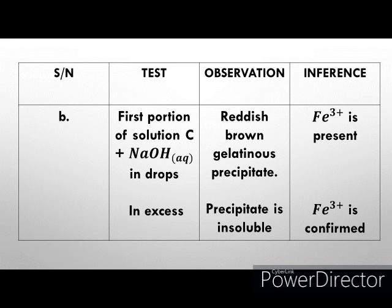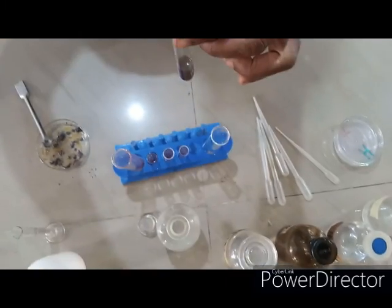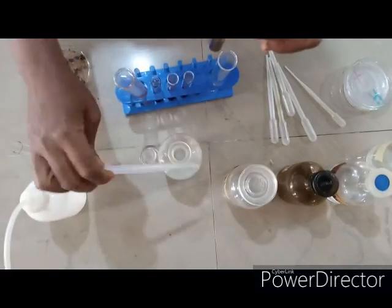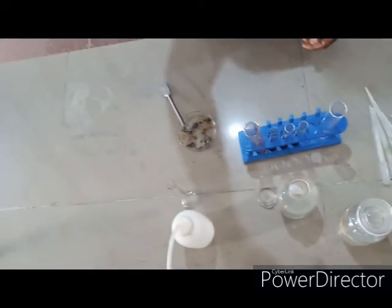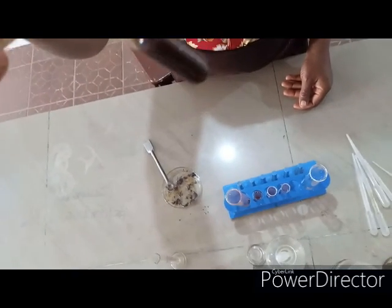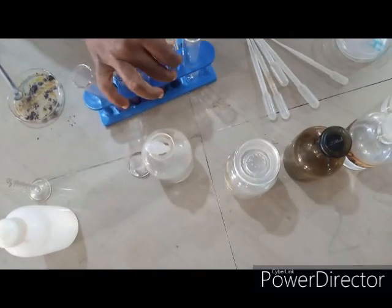Our inference is iron 3 plus is present. Now add sodium hydroxide in excess and check whether the precipitate will dissolve or not. As you can see, the precipitate remained insoluble. Iron 3 plus is confirmed.